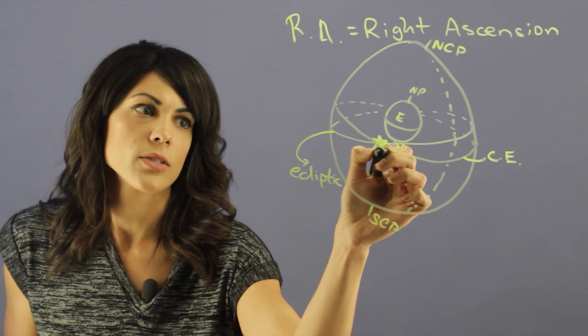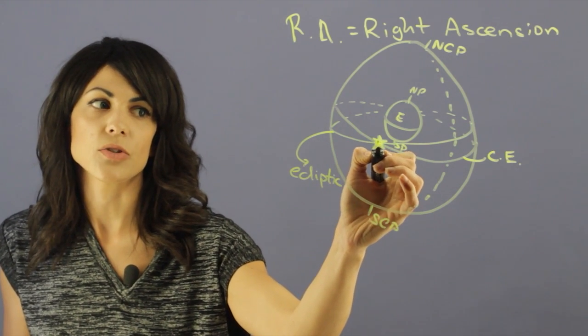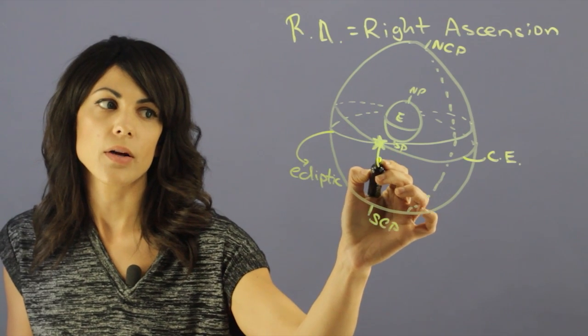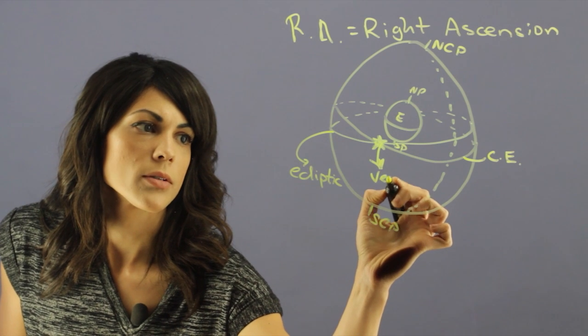So here we have our sun. Now, the point in which the ecliptic crosses your celestial equator, right here, we call this the vernal equinox.